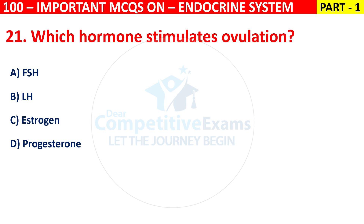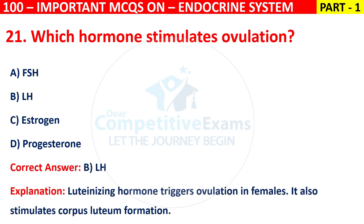The correct answer is B, that is LH. Luteinizing hormone triggers ovulation in females. It also stimulates corpus luteum formation.